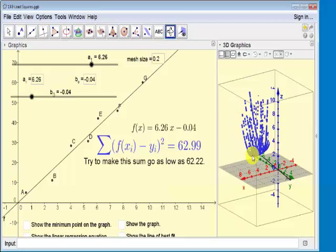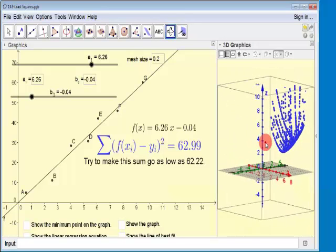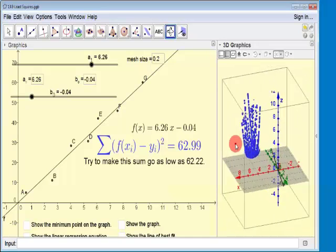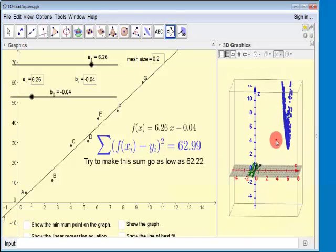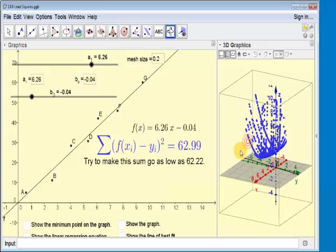So you see what happens here is you trace all the points, and what you're actually looking at, it's kind of skinny, but this is the graph of a paraboloid.